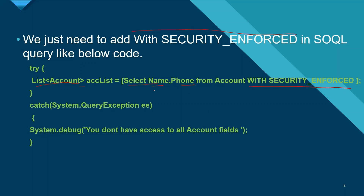This means that if the running user doesn't have access to the phone field or the name field, the try block will not execute and it will go to the catch block. The exception message will indicate that the user doesn't have access to all the Account fields, because while the user might have access to the Account record, they don't have access to the name or phone field of the Account object.